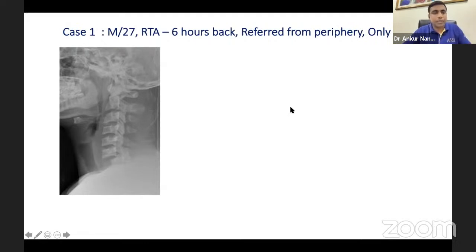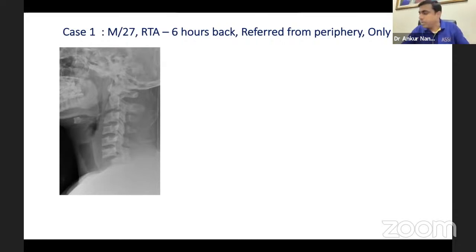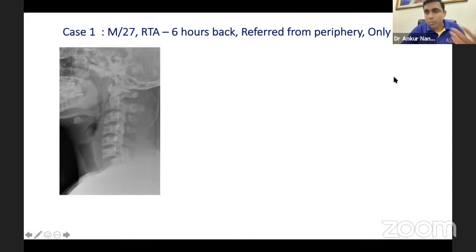The first case: a 27-year-old male who presented to casualty about six hours after a road traffic accident. He was seen in a peripheral hospital, given primary treatment, and came with an X-ray. Dr. Firoz, if this patient is in your casualty and you've seen this X-ray, how would you proceed and what are the first things on your mind?